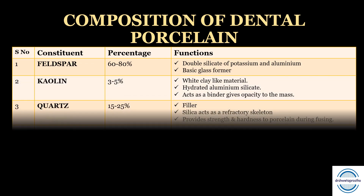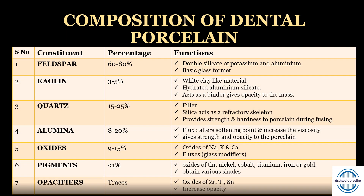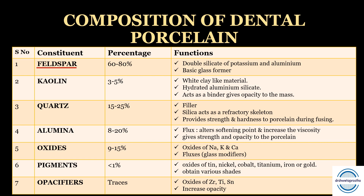Next is the composition of dental porcelain — very important and often asked in MCQs, long notes, and viva. The first and main constituent is feldspar, present at 60 to 80%. It is a naturally occurring mineral and the basic glass former. It is the double silicate of potassium and aluminium, also known as albite. When mixed with a metal oxide and fired at high temperature, it forms a glassy phase that is able to soften and flow slightly.